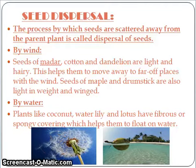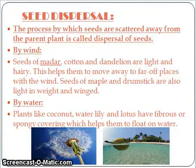Dispersal by wind: Seeds of madar, cotton, and dandelion are light in weight and hairy. This helps them to scatter away to far-off places with the wind. The seeds of maple and drumstick are also light in weight and winged.